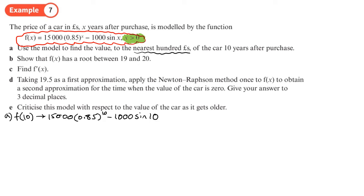It doesn't actually say in this question whether sine is in degrees or radians, it should do really, it's actually in radians. That's the mode you need to have your calculators on. Now this gives you an exact value of 3497.137, we wanted it to the nearest hundred so it's going to be £3,500.